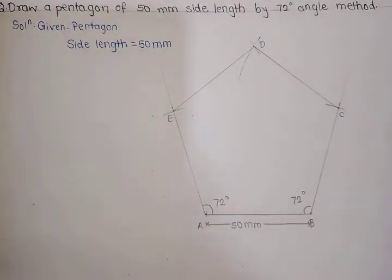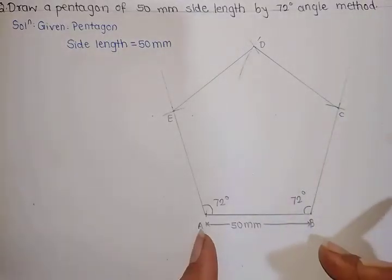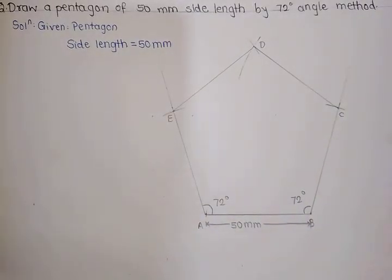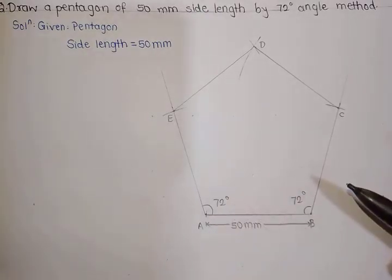Hence we have drawn a pentagon by 72-degree angle method with side length of 50mm. All the sides will be of 50mm distance and all the angles will be of 72 degrees. Thank you.